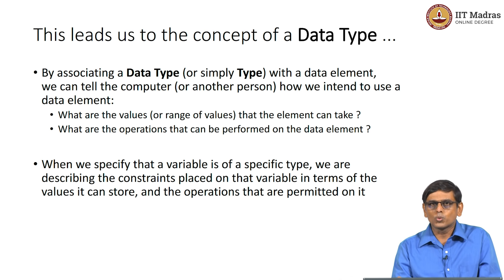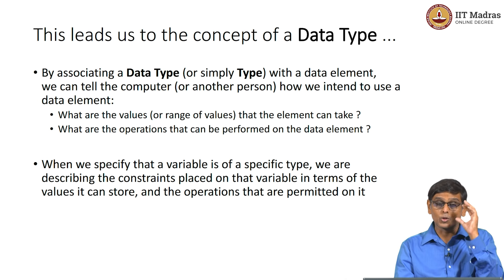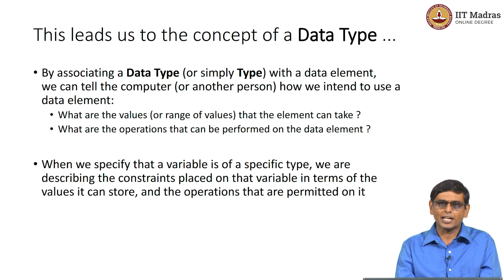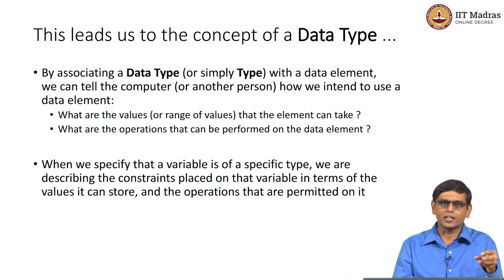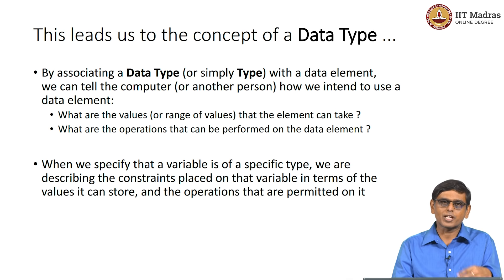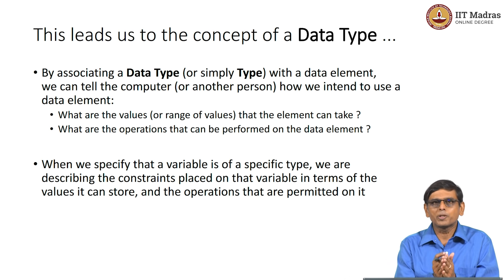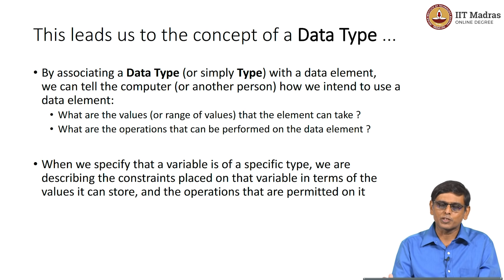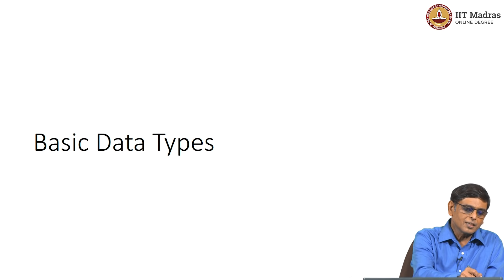A data type allows us to tell the computer — or another person — how we intend to use a data element: what range of values is allowed and what operations we want to perform. When we specify that a variable is of a specific data type, we are telling the computer to check that values assigned to that variable are within the permitted range, and that only permitted operations are performed. Non-permitted operations should be rejected. A data type is basically a way to ensure some kind of sanity of the data in a more formal way.